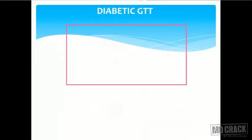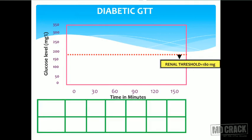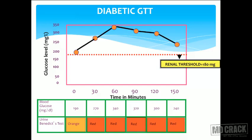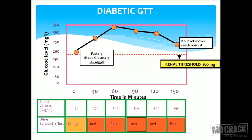Regarding the diabetic GTT: once a person is diagnosed as diabetic, GTT is contraindicated. We are not going to give an extra glucose load to see if beta cells can synthesize insulin — we already know the diagnosis. The diabetic GTT graph would show blood glucose values exceeding the renal threshold with Benedict's tests coming positive throughout. Previously the terms moderate diabetic and severe diabetic were used, but nowadays we only use: diabetic, non-diabetic, impaired glucose tolerance, or impaired fasting glycemia, as recommended by the American Diabetes Association.